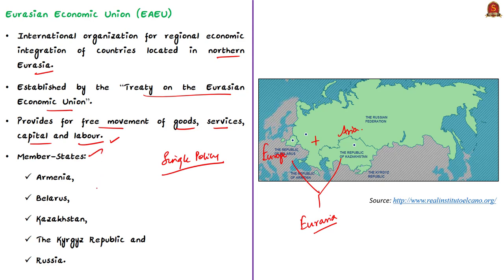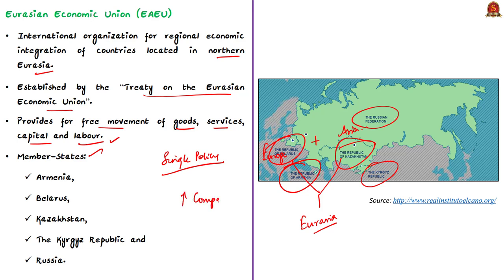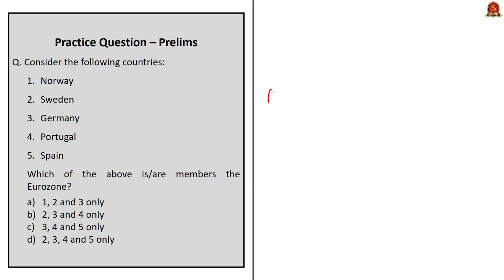The Eurasian Economic Union consists of five member states: the Republic of Armenia, Republic of Belarus, Republic of Kazakhstan, Republic of Kyrgyzstan, and the Russian Federation. The union was created to comprehensively upgrade and raise the competitiveness and cooperation between national economies, and also aims to promote stable development to raise the living standards of member states.